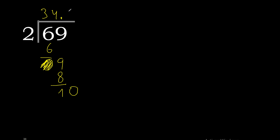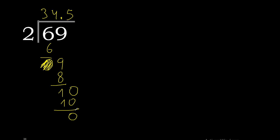2 multiplied by 6 is 12 — excessive. Multiplied by 5 is 10. 10 minus 10 is 0, therefore finish. Therefore, 69 divided by 2 is 34.5.